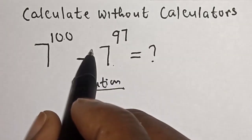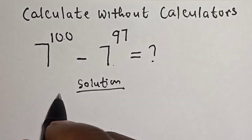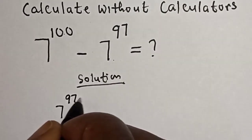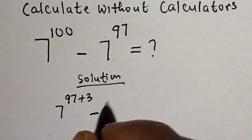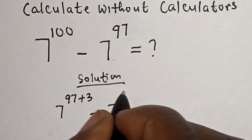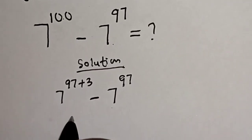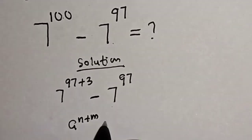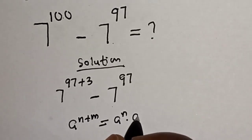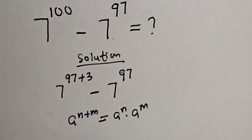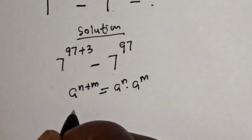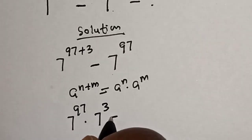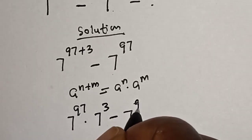Solution: we have 7 raised to power 100 minus 7 raised to power 97. 7 raised to power 100 can be written as 7 raised to power 97 plus 3, minus 7 raised to power 97. Remember this rule: a raised to power n plus m equals a raised to power n multiplied by a raised to power m. So this becomes 7 raised to power 97 multiplied by 7 raised to power 3, minus 7 raised to power 97.